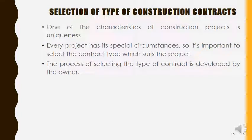Selection of type of construction contract: one of the characteristics of a construction project is uniqueness — every project has its special circumstances. So it is important to select the contract type which suits the project. For example, if constructing in a marine environment, specialized people are required; if laying road, specialized people are required; if working on a high-rise building, specialized people are required.